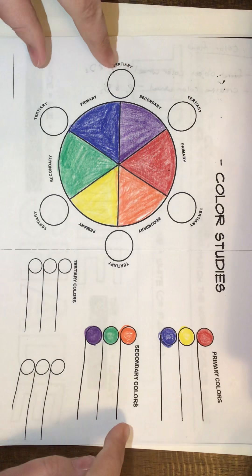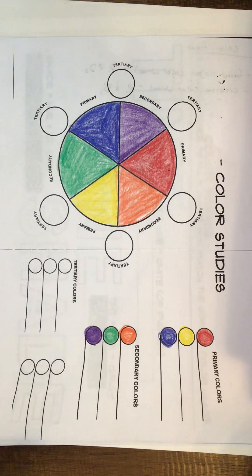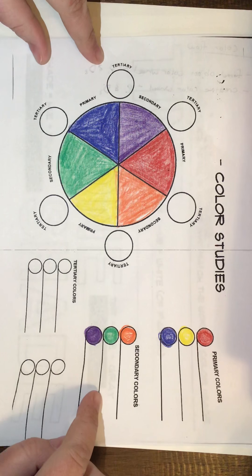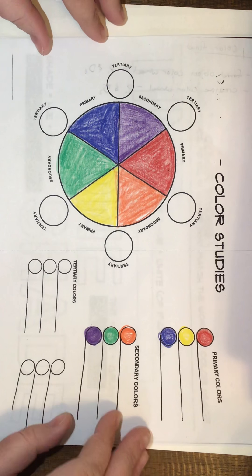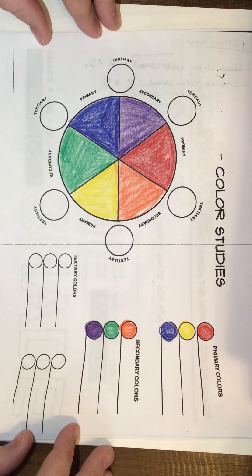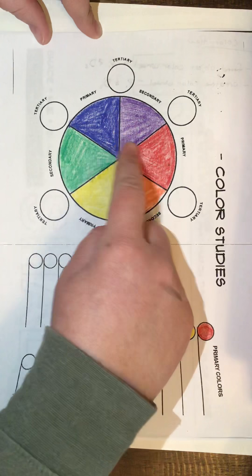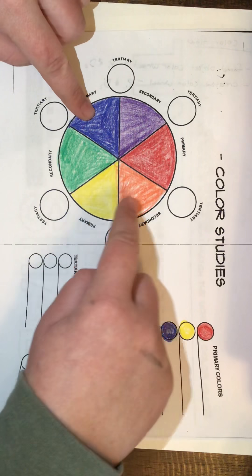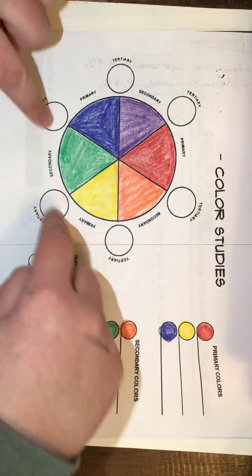So in your sketchbooks that I sent you home with last week, you have a page that kind of looks like this. This is about as basic as a color theory worksheet can get. You have your color wheel here labeled with your primary colors and your secondary colors and a new set of colors we're going to talk about.